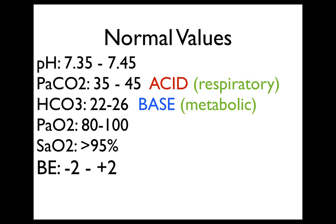Normal pH is 7.35 to 7.45. Normal CO2 is 35 to 45. CO2 is an acid and is from the respiratory system. Normal bicarb is 22 to 26. Bicarb is a base from the metabolic system. Normal PaO2 is 80 to 100%, SaO2 is greater than 95%, and base excess is negative 2 to plus 2.